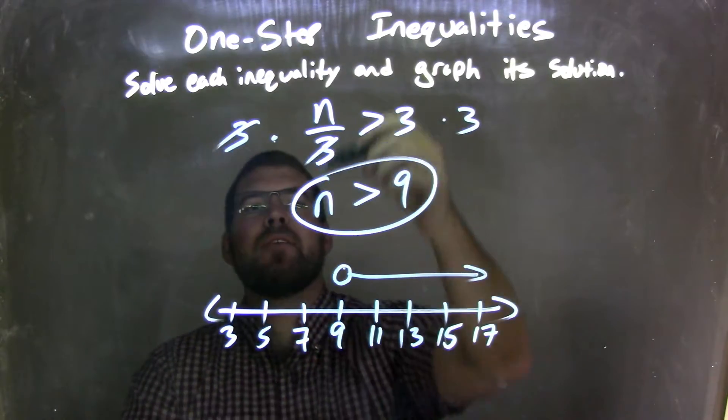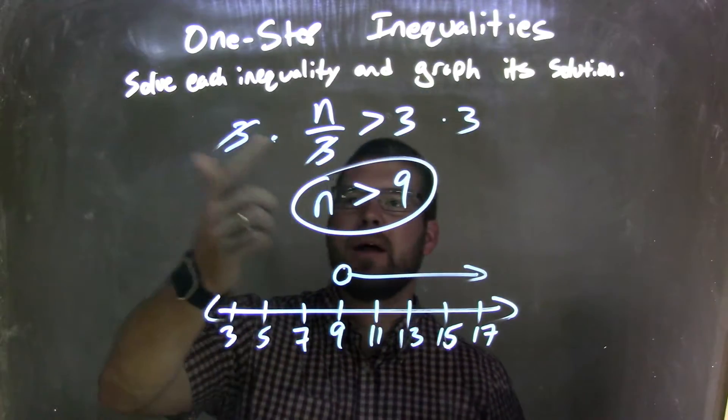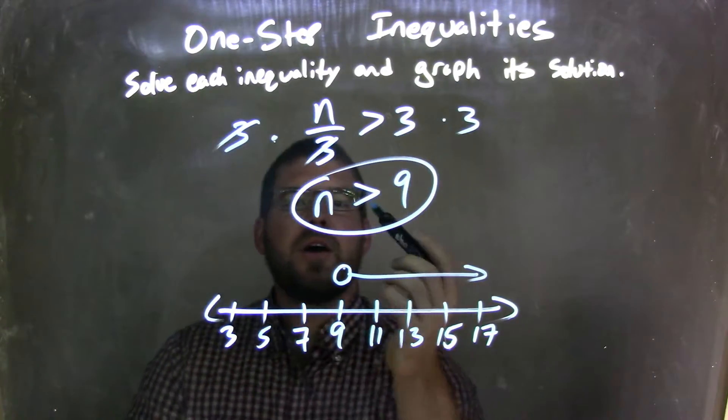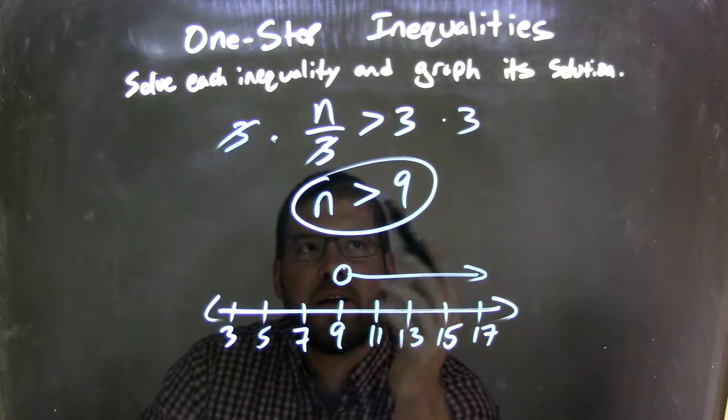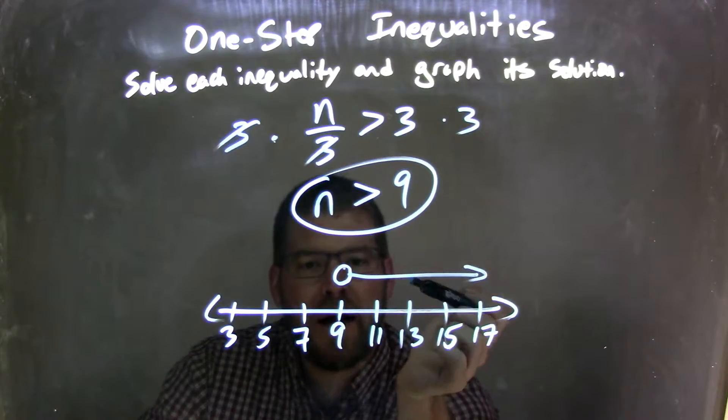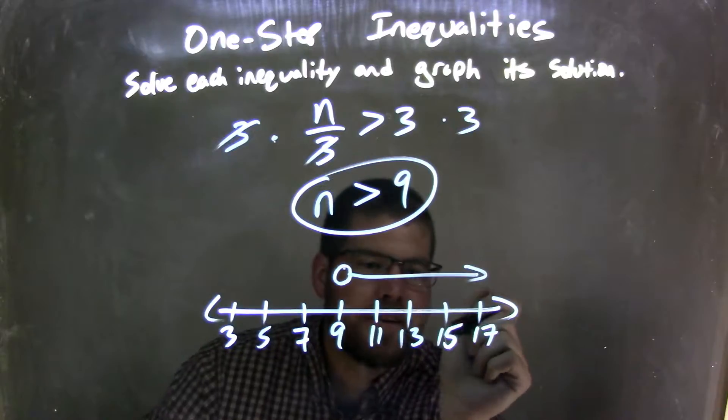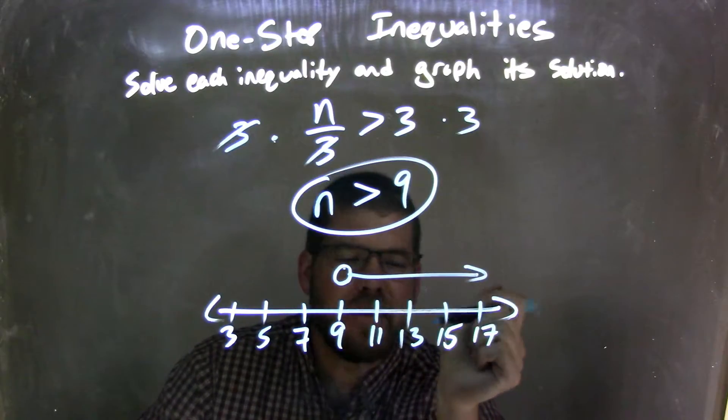So let's recap. We're given n over 3 is greater than 3. I multiply both sides by 3 to get n by itself, which left me with n is greater than 9. Now, when I graphed that, I made my number line, then I chose to go by 2's, except right there I almost put 14 and then I erased it.